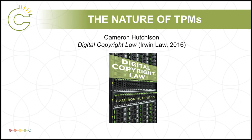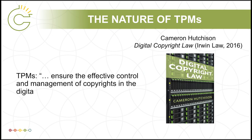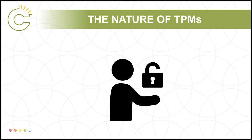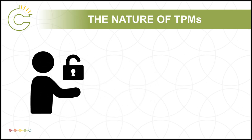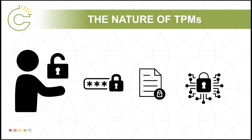Cameron Hutchison, University of Alberta law professor and author of the 2016 book Digital Copyright Law, states that technological protection measures are intended to ensure the effective control and management of copyrights in the digital sphere. The implementation and enforcement of TPMs, however, have become controversial due to broad interpretations of what an effective technology might be, in addition to the risk they run of stifling innovation and restricting competition. The broad nature of TPMs as defined by the Copyright Act has thus led to many different protection measures being categorized as TPMs.